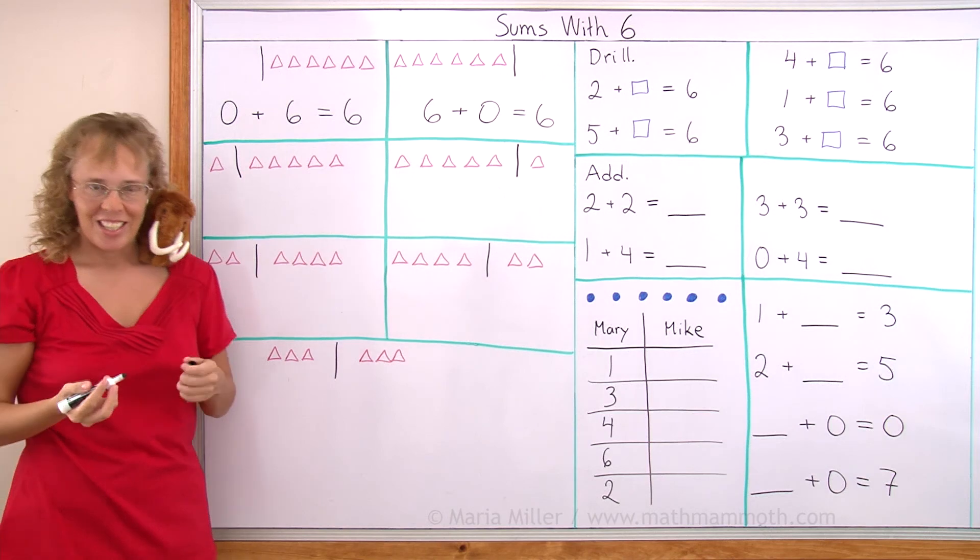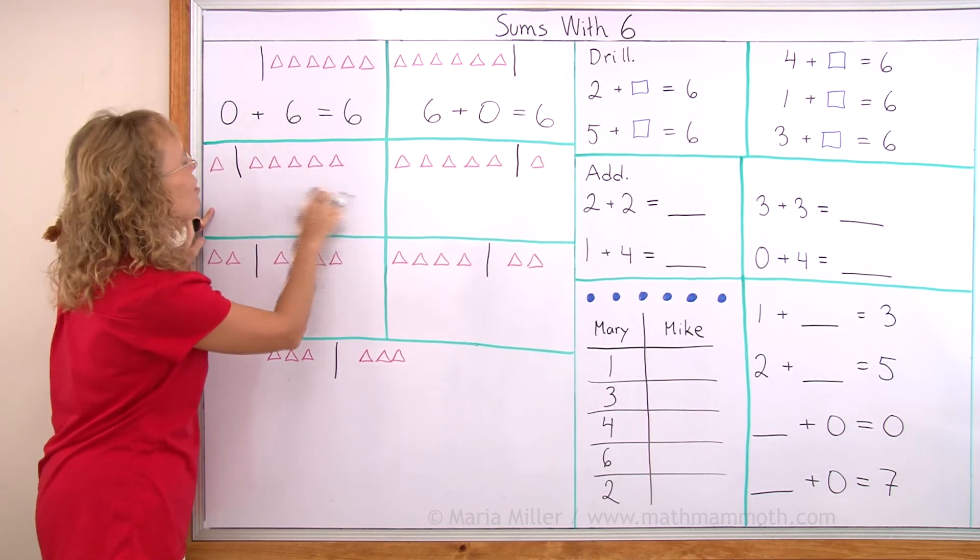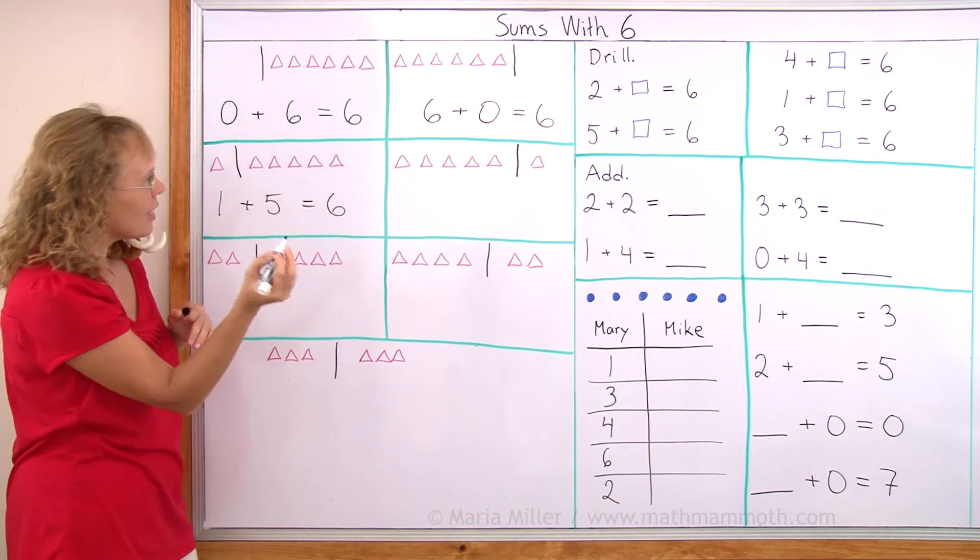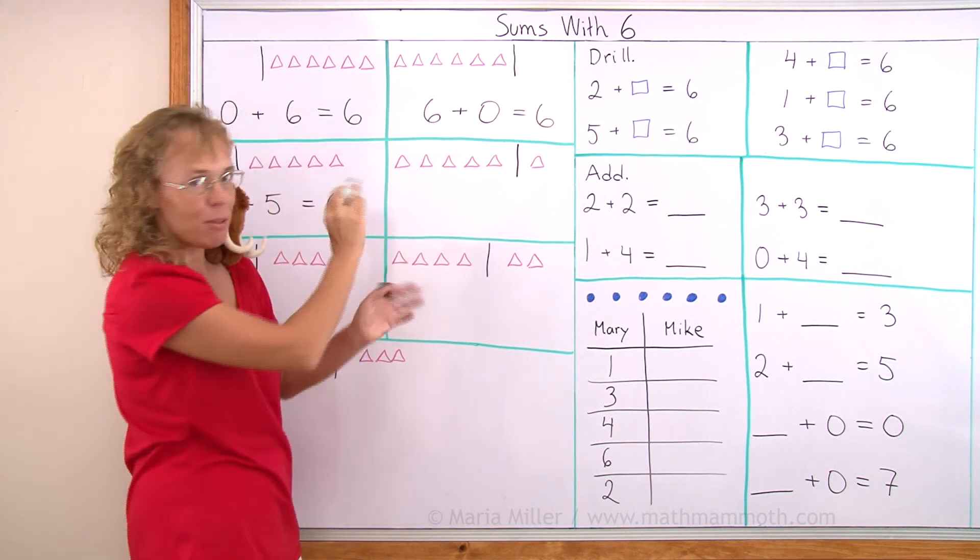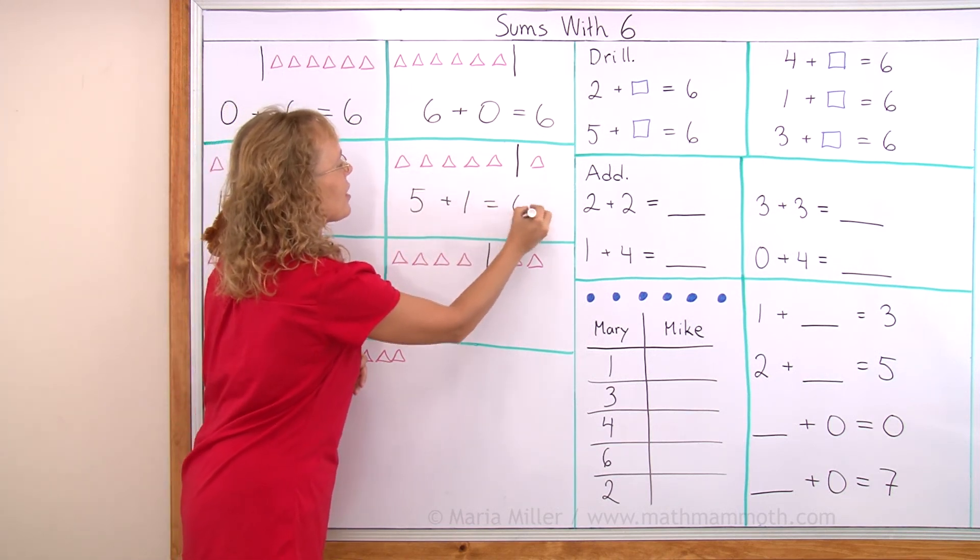Now here again I have six triangles in total but one on this side and five on this side. One plus five makes six, right? And then the other way around, five and one. Five on this side, one on the other makes six.